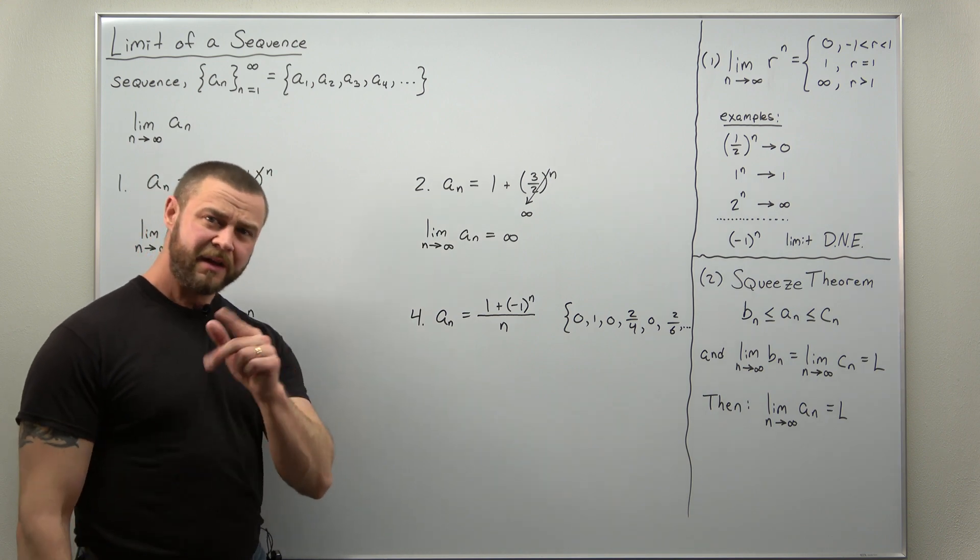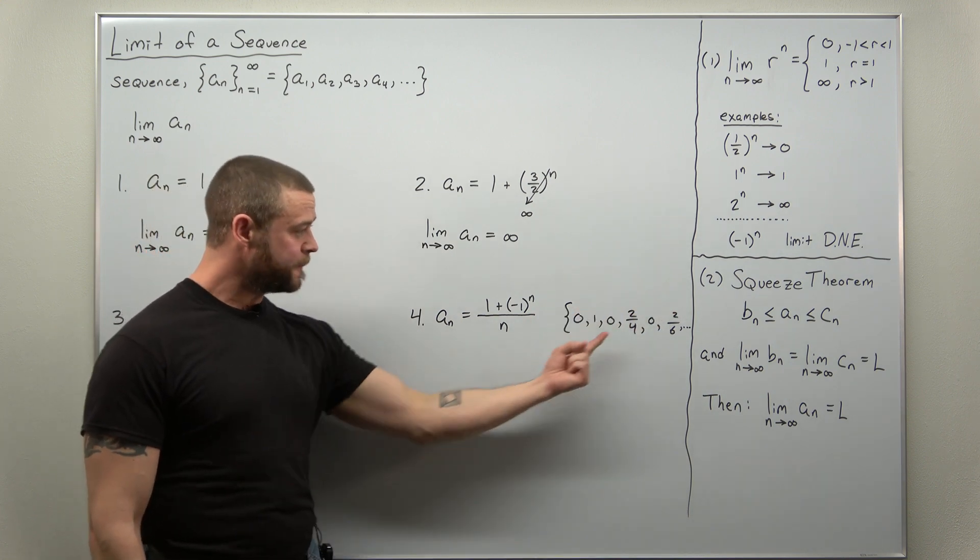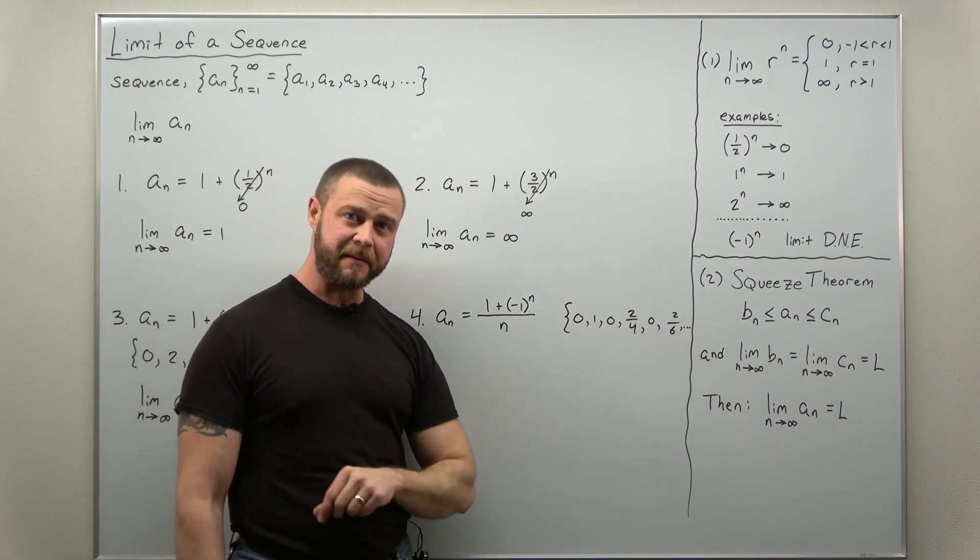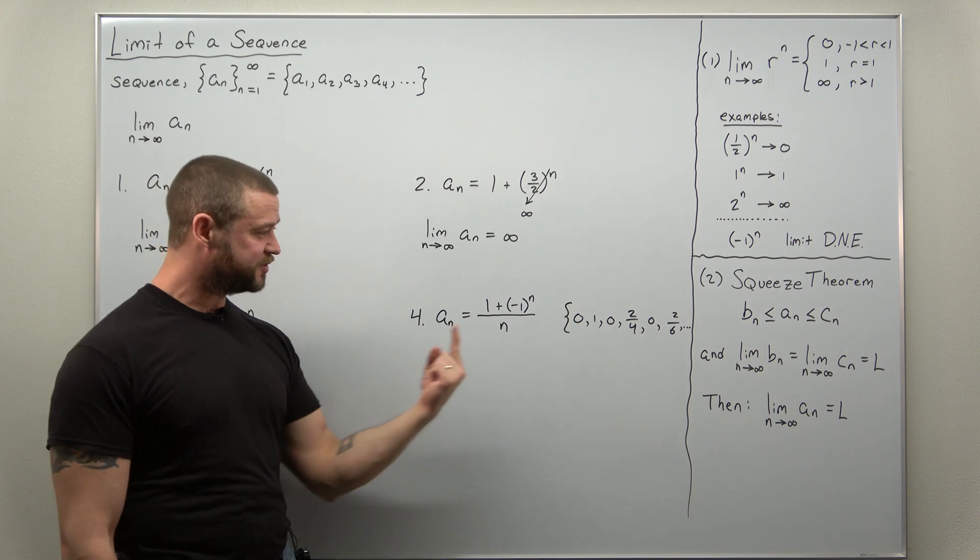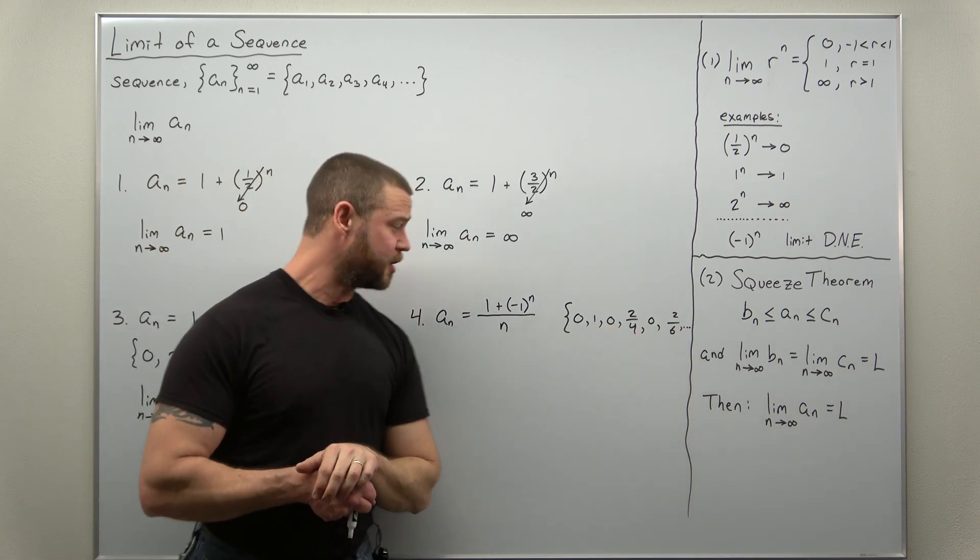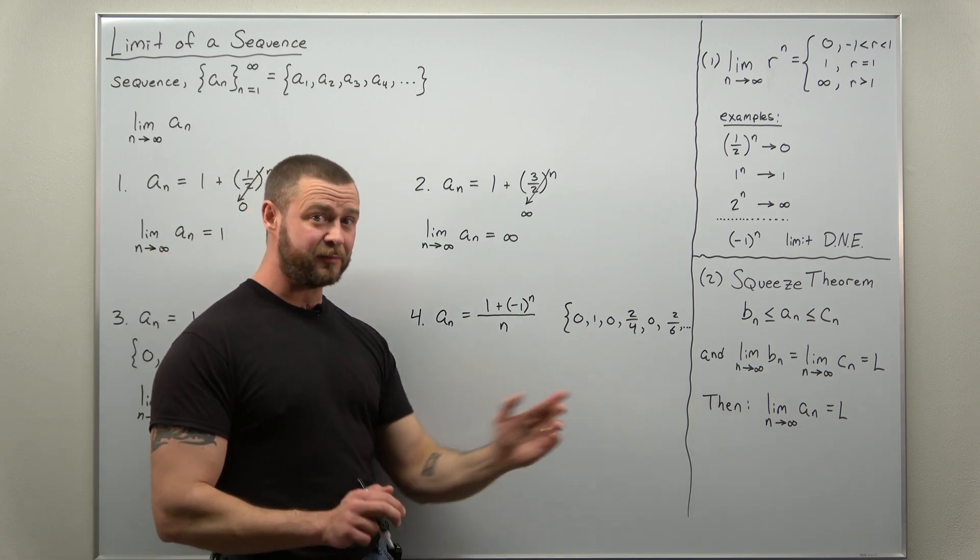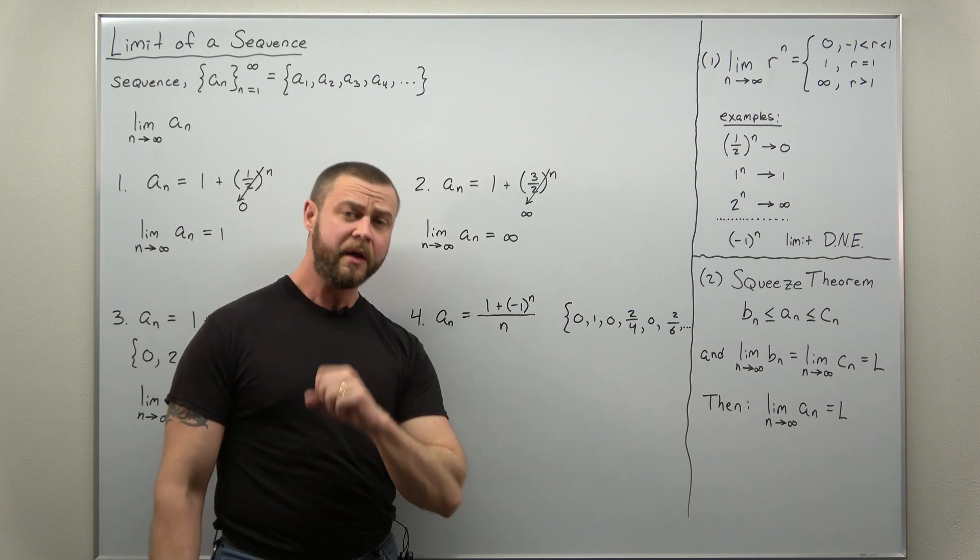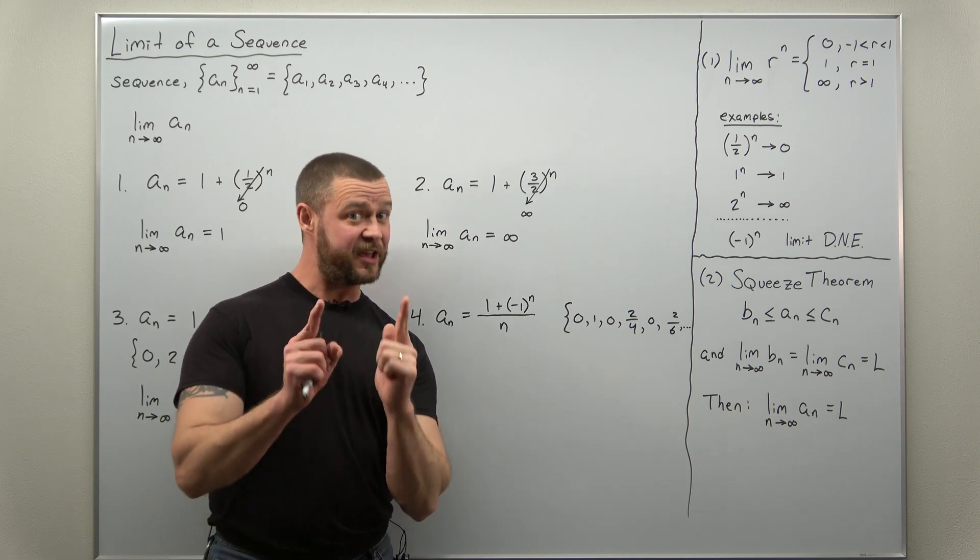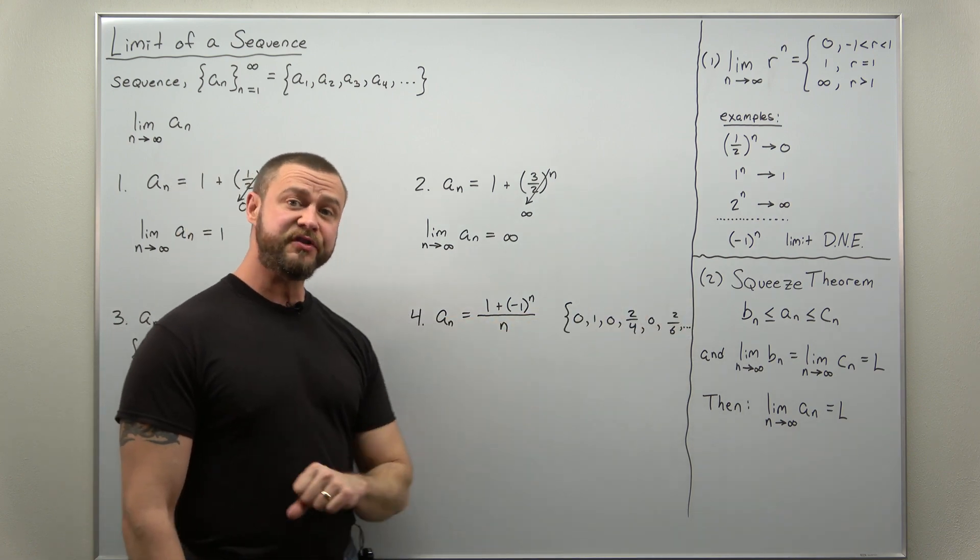And it looks like here that the numerator for the non-zero terms is going to be two, but your denominator keeps getting bigger. So this seems like it's going to approach zero in the limit as n goes to infinity. But how do we make that precise? Just writing out a few terms is not proper justification or work. How we make this precise to get you full credit in your calc two course is using the squeeze theorem.